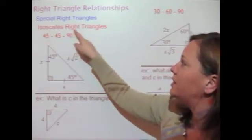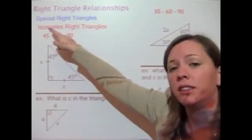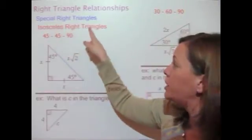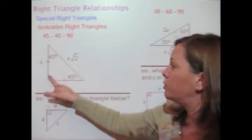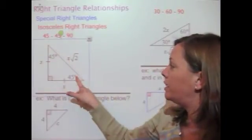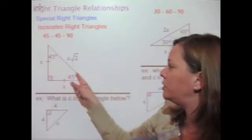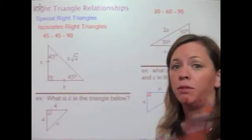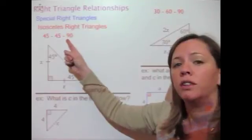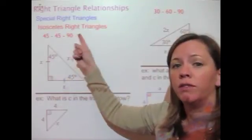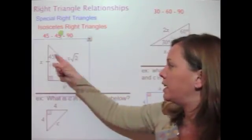The first is the isosceles right triangle. Isosceles means that two of the sides are congruent, and if two of the sides are congruent, two of the angles are congruent. Since it's a right triangle, those two angles must each be 45 degrees. So another way we call this triangle is a 45-45-90 triangle, naming it by its angles.